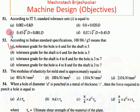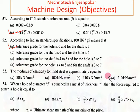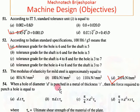The modulus of elasticity of mild steel is approximately equal to 210 kN per mm². Next: when a hole of diameter d is punched in a metal of thickness t, what is the force required to punch the hole?